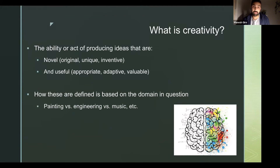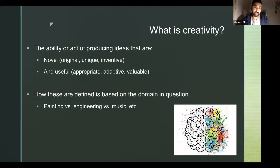Of course, there's a lot of variability in how exactly 'novel' and 'useful' are defined — it depends on the domain. It's going to be very different if you're a painter creating something versus an engineer, where you have a more constrained space of creativity with real physical constraints. Music, for example, can be evaluated based on the emotion it invokes, not so much engineering. Within this framework of novel and useful, there's also a lot of variability.